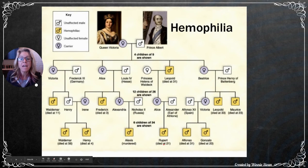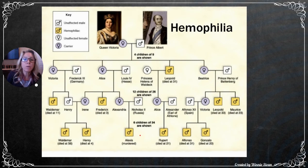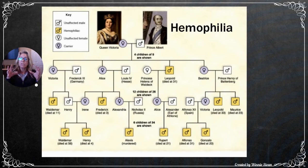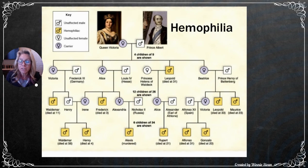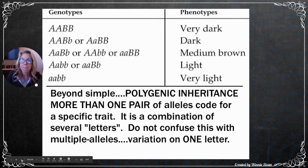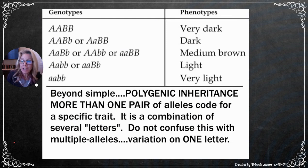Hemophilia is another example of a sex-linked recessive trait. It was a problem throughout European noble families because political alliances led to cousin intermarriage — and as noted earlier, inbreeding increases the likelihood of expressing recessive traits because you're more likely to be carrying the same recessive alleles.